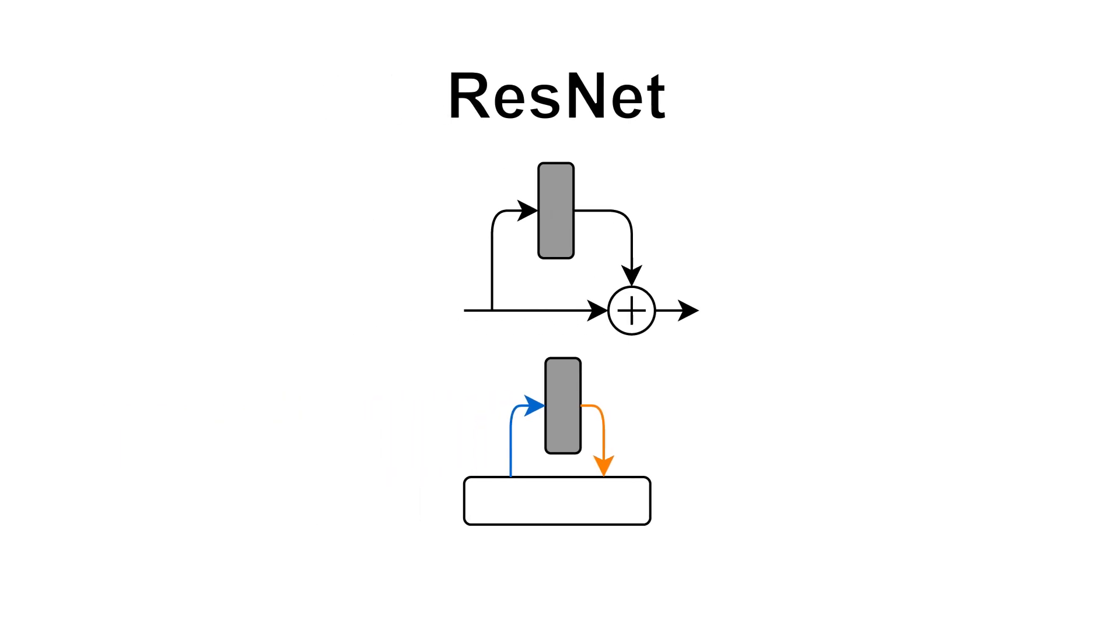In this view, every layer is replaced by an op that reads a subset of memory, changes the data, then writes to another subset. Single branch networks like ResNets overwrite one large memory bank at each layer.